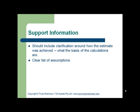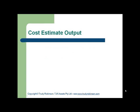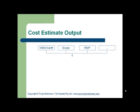You also need to have a clear list of assumptions and constraints. The inputs to the cost estimate include all the project documentation: the work breakdown structures, Gantt charts, scope, risk management plan, and so on. Once the cost estimate is developed, this leads to developing the budget.